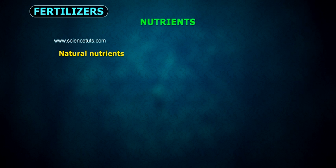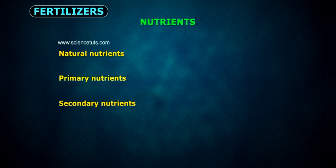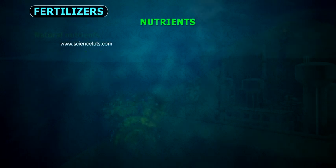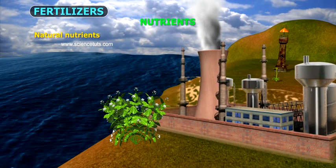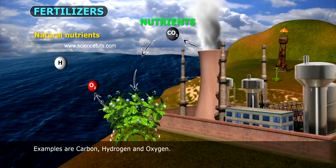The four nutrient types are: natural nutrients, primary nutrients, secondary nutrients, and micronutrients. Natural nutrients examples are carbon, hydrogen, and oxygen.